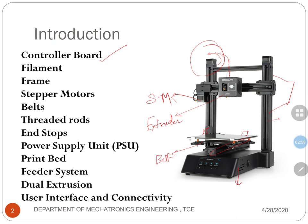Threaded rods are available here — in this case embedded here. End stops, which are mechanical switches, are available here or behind the motor. When the 3D printer moves along the minus Z axis, it is sensed by the mechanical switch present here. The power supply unit is present here, though it is not shown in this picture.